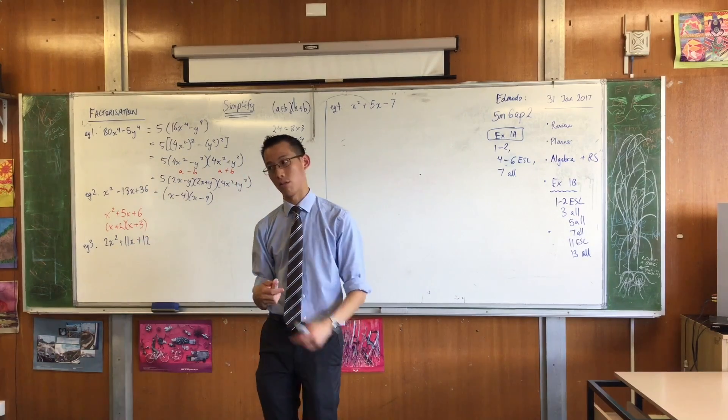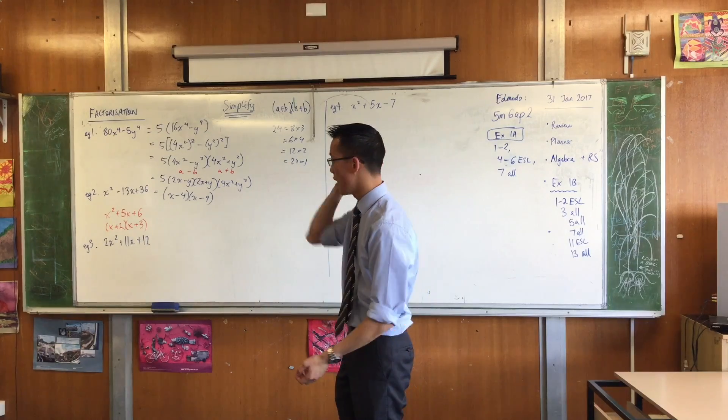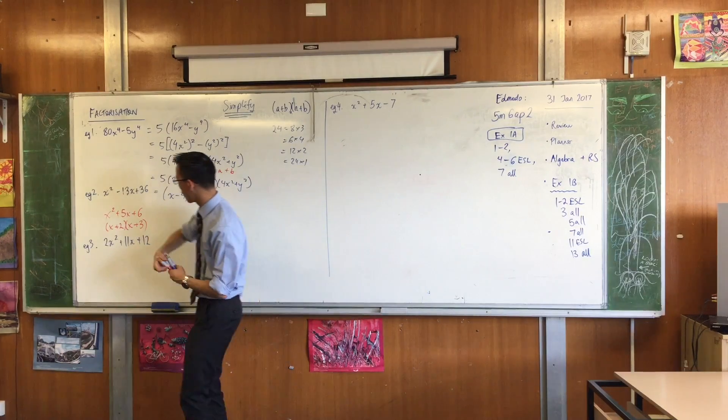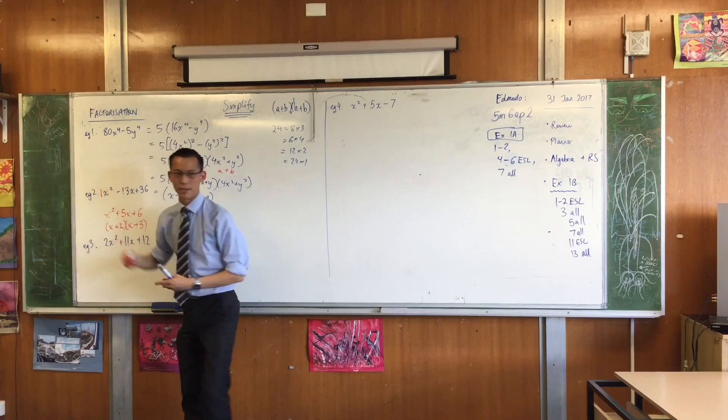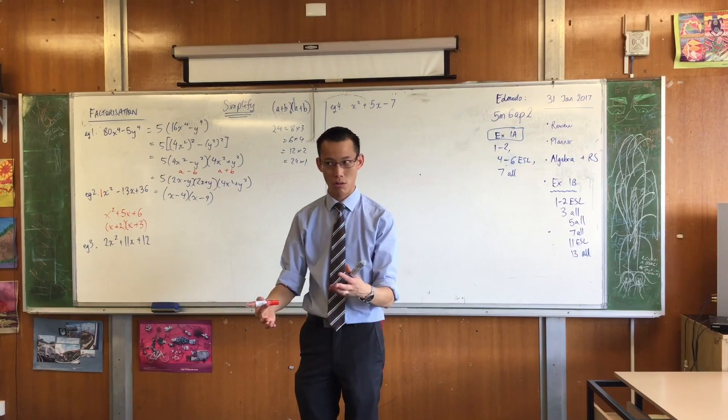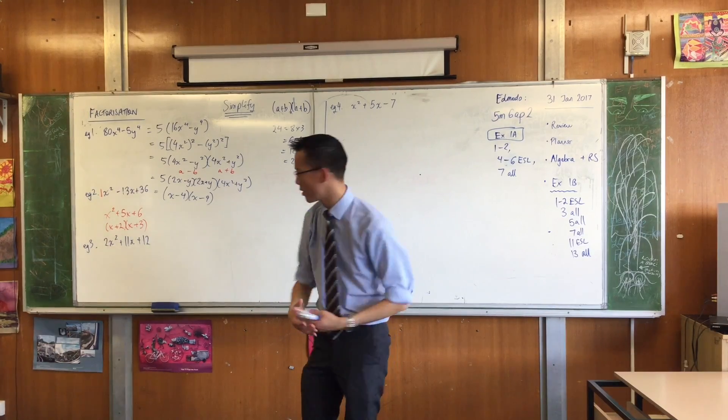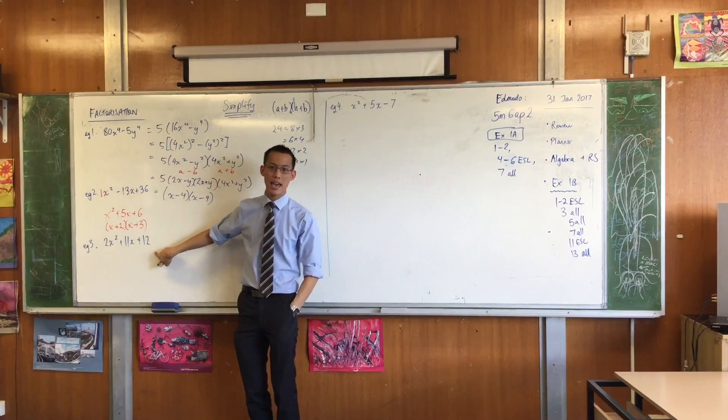I'm content with that. We give this kind of quadratic a name because its coefficient over here is one. Does anyone know the name that we give to this? We call them monic, because 'mono' is Latin for one. Okay, so this guy here is a non-monic quadratic.